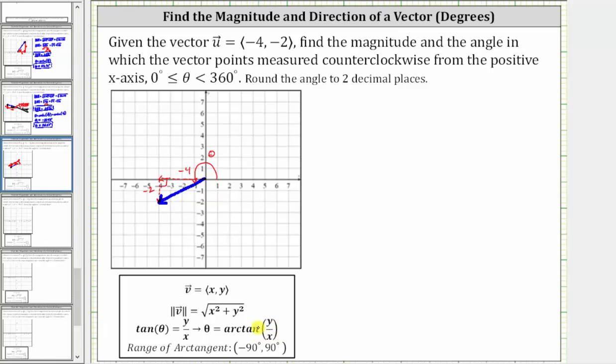We need to be careful in determining theta, because the output or range of arc tangent is the open interval from negative 90 degrees to positive 90 degrees. So we do need to make sure we give the correct angle theta for the direction of the vector.